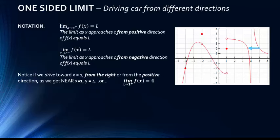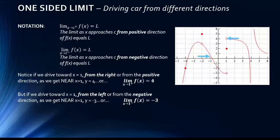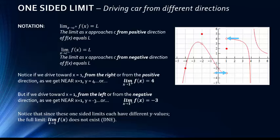Looking at our graph: if we drive toward x equals 1 from the right or positive direction, as we get near x equals 1, y equals 4. So the limit as x approaches 1 from the positive direction of f of x equals 4. But if we drive toward x equals 1 from the left or negative direction, as we get near x equals 1, y equals negative 3. So the limit as x approaches 1 from the negative direction of f of x equals negative 3. These limits are both as x goes to 1 but from different directions, and they have different values. If the one-sided limits have different values, then the full limit as x approaches 1 does not exist.